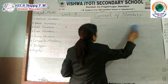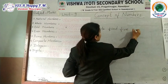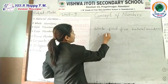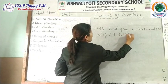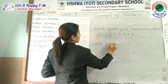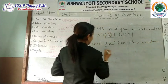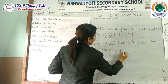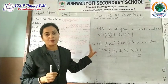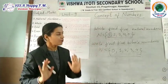Here is an example to make it clearer. If the question says write the first five natural numbers, you start from 1: one, two, three, four, five. If the question says write the first five whole numbers, you start from zero: zero, one, two, three, four. The easy way to remember is that whole numbers start from 0 and natural numbers start from 1.